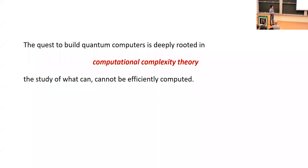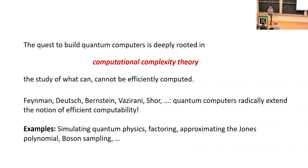From the very beginning, this quest to build quantum computers has been deeply rooted in something called computational complexity theory — the study of what can and cannot be efficiently computed. If you look at the motivation that led people like Feynman, Deutsch, and others to investigate quantum computers, it's the notion that quantum computers can solve certain problems much more efficiently than classical computers. They were motivated by problems like simulating quantum physics, factoring, boson sampling, and so on.